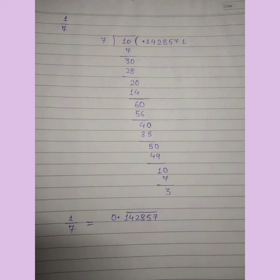1/7 का divide कैसे होता है — screen पर दिखाई दे रहा है। 1 numerator है और 7 denominator। 1 कभी भी 7 से divide नहीं हो सकता, इसलिए point लगाकर 0 लगा दिया, तो 1 बन गया 10। 7 × 1 = 7, 10 − 7 = 3 बचा। 3 divide नहीं होता, तो 0 लगाया — 30 बना। 7 × 4 = 28, 30 − 28 = 2 बचा। 2 divide नहीं होता, तो 0 लगाया — 20 बना।